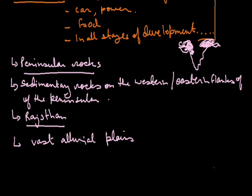Minerals are also found in glacier deposits. India's vast alluvial plains in northern India are almost devoid of economic minerals. These variations exist largely because of differences in geological structures, processes, and the time involved in the formation of these minerals. Minerals are found in virtually all parts of India, including near the coastal areas.